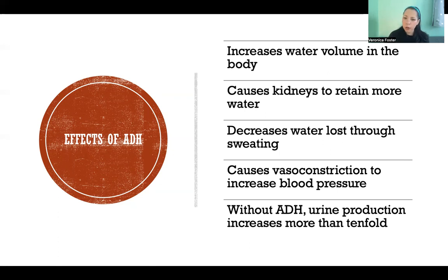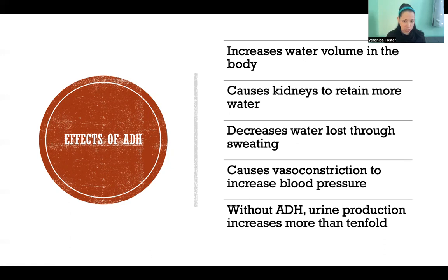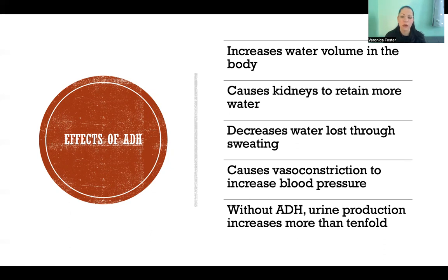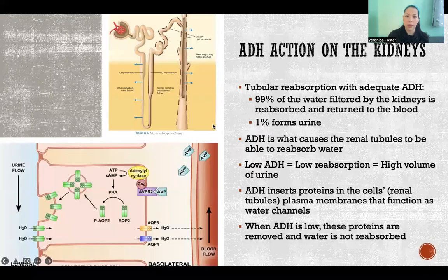ADH increases water volume mostly by causing the kidneys to retain water, so you lose less through urine. It also decreases water lost through sweating. If there is no ADH secretion, you will produce 10 times more urine than normal — large amounts of dilute urine. If that isn't corrected, a person could actually die within days if they aren't replacing water fast enough and lack the ADH needed to retain what they take in.